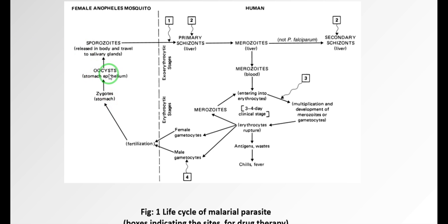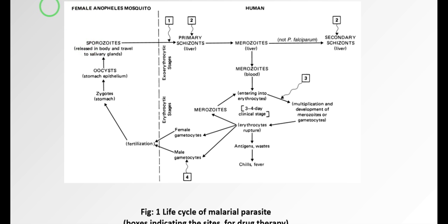The oocysts reside in the stomach epithelium. The oocyst then migrates into the salivary gland, where it is stored in the form of sporozoites in the salivary gland of the female Anopheles mosquito. When the female Anopheles mosquito bites a human again, the cycle repeats.